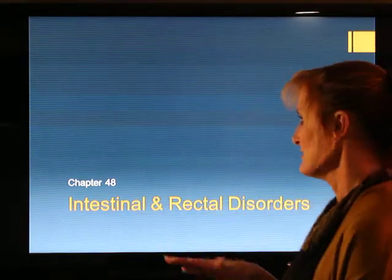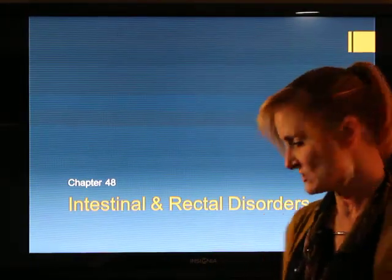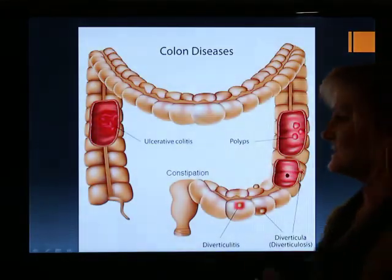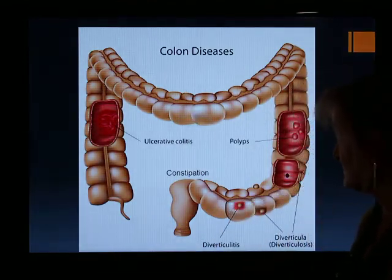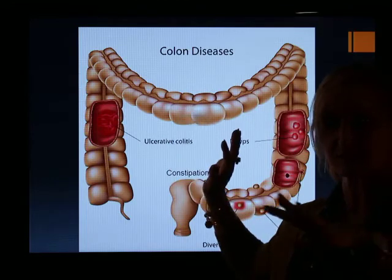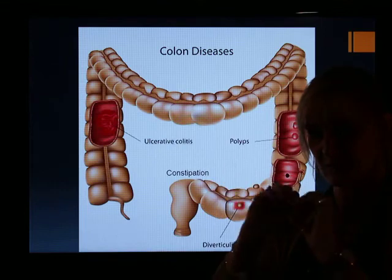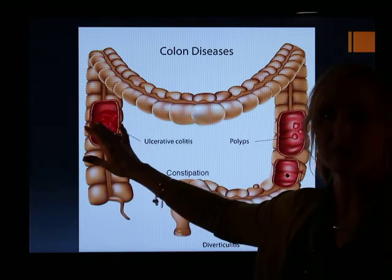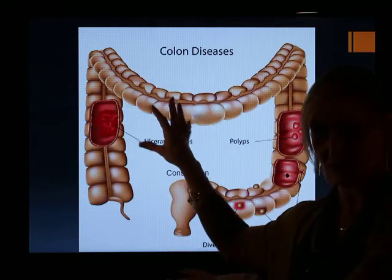Let's finish up with chapter 48 and keep moving down the GI tract. We're going to talk about intestinal and rectal disorders. The first colon disorder is ulcerative colitis, which is similar to Crohn's disease — we'll discuss both as part of inflammatory bowel diseases. It's essentially an ulcer in the colon, similar to esophageal and gastric ulcers, but located in the colon.